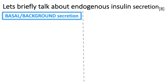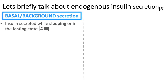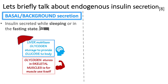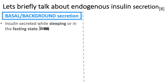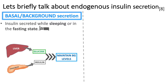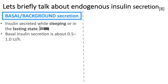Basal or background insulin secretion is the insulin secreted by the pancreas while we're sleeping or fasting. During fasting, the body still requires a steady supply of glucose — especially the brain — and the liver's glycogen storage helps provide that. The muscle also has glycogen storage, but that is for the muscle's own use. Basal secretion is about 0.5 to 1 unit per hour.